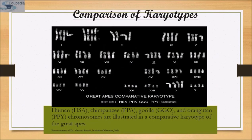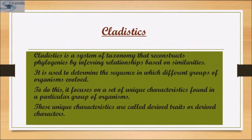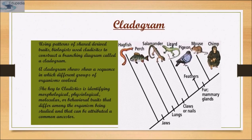A comparison of karyotypes between human, chimpanzee, gorilla and orangutan chromosomes can show relatedness. Cladistics is a system of taxonomy that reconstructs phylogenies by inferring relationships based on similarities, used to determine the sequence in which different groups of organisms evolved. Unique characteristics are called derived traits or derived characters. Using patterns of shared derived traits, biologists construct a branching diagram called a cladogram. The key to cladistics is identifying morphological, physiological, molecular or behavioral traits that differ among organisms and can be attributed to a common ancestor.